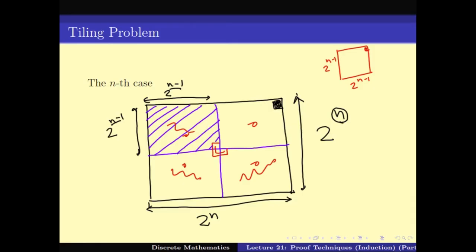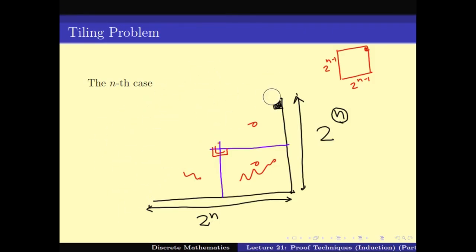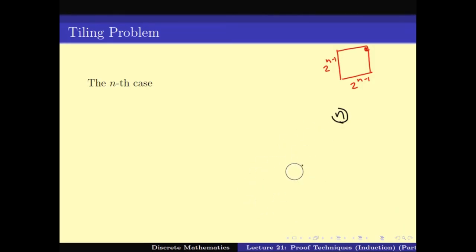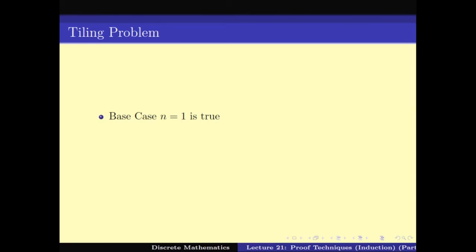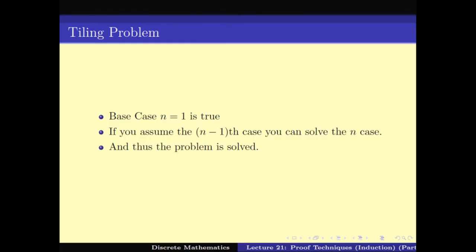Using the n−1 case, we can solve the nth case. The idea is to take the problem instance of size n and break it down into smaller instances of size n−1, then use the induction hypothesis to solve it. So we have that the base case n = 1 can be solved trivially, and assuming the n−1 case we can solve the nth case. This is exactly version 1 of the induction hypothesis, applied to this particular combinatorial problem.